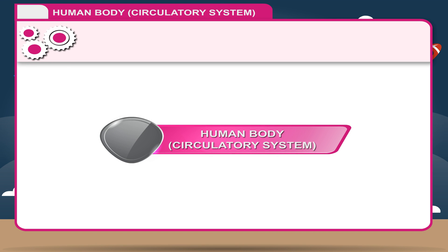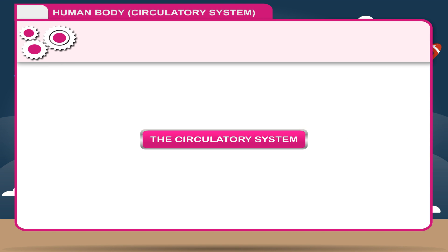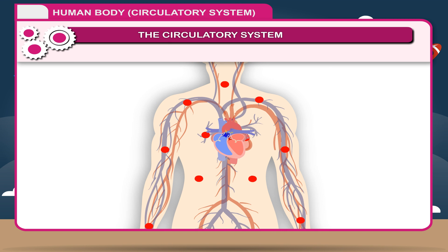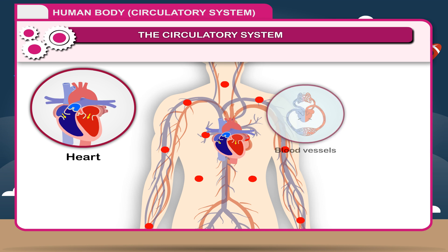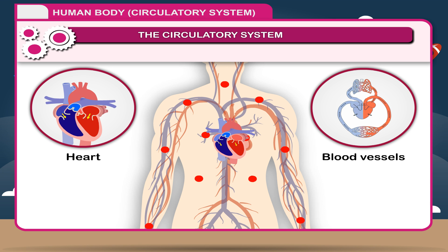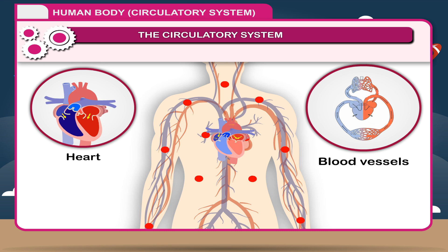Human Body Circulatory System. In humans, the circulatory system is the combined function of the heart, blood, and blood vessels to transport oxygen and nutrients to the organs and tissues throughout the body and carry away waste products. The elements of this circulatory system are the heart, blood vessels, and blood.